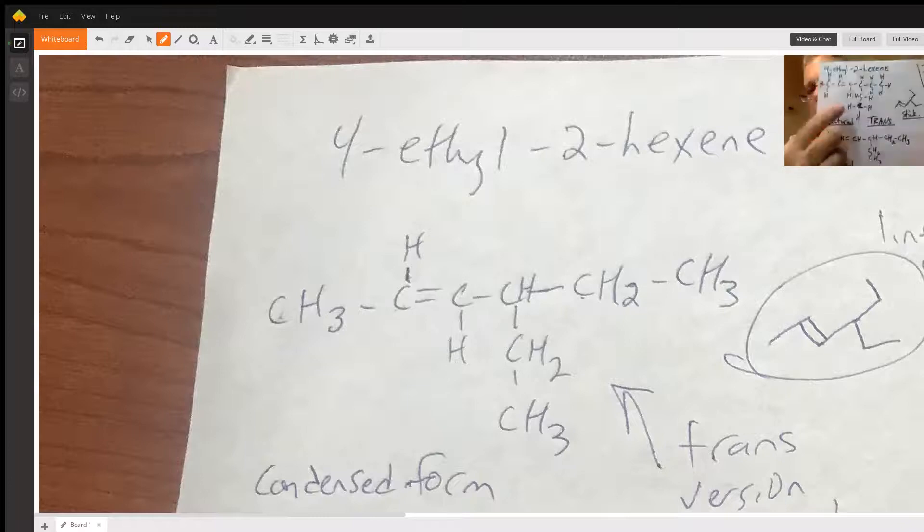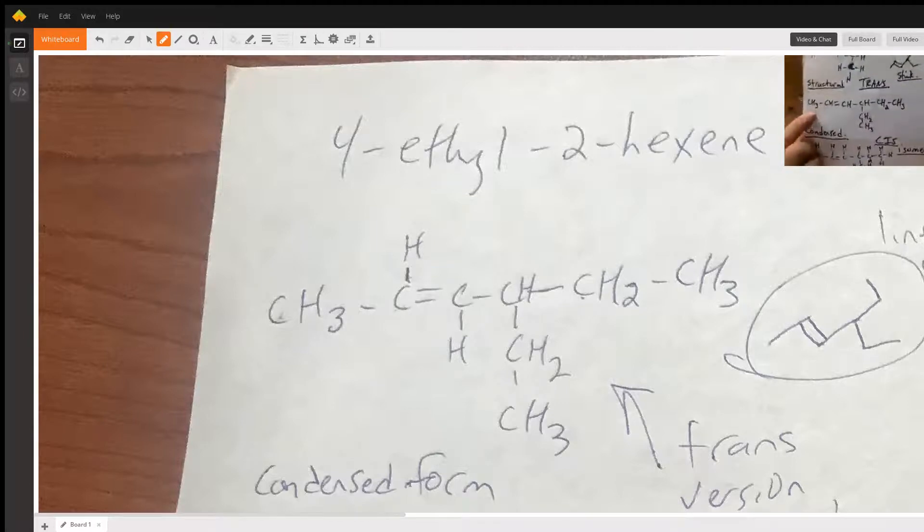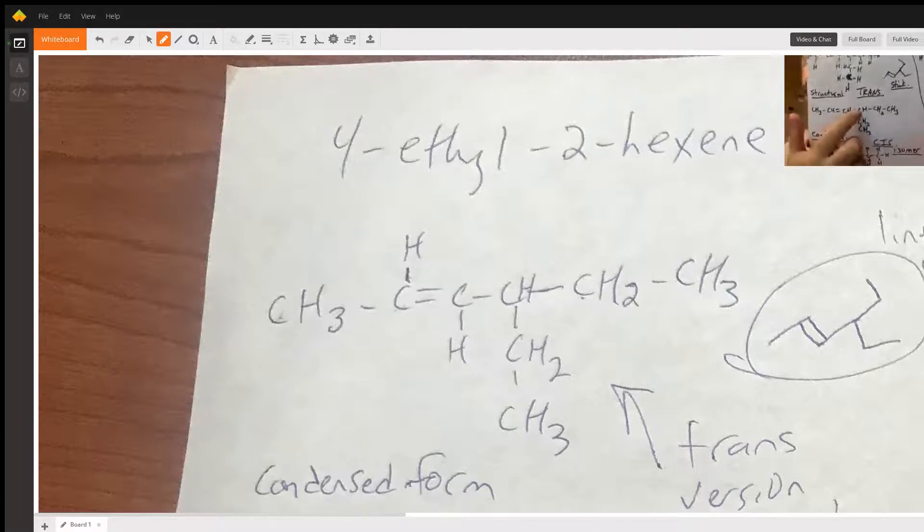That's the structural version. The condensed version looks like this, where CH3, CH, double bond CH, and then on the fourth carbon, a CH2, CH3 group coming off and a CH2, CH3 group coming off.